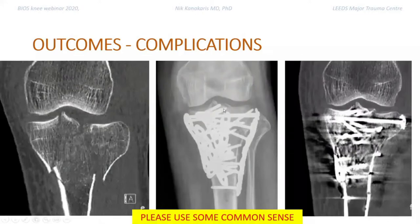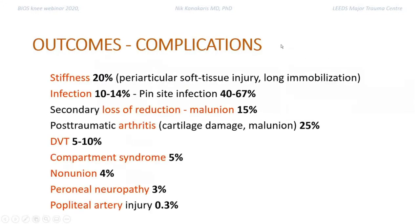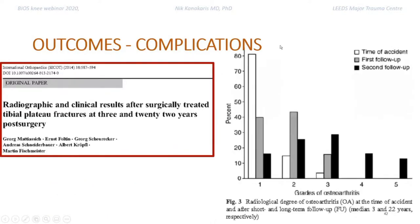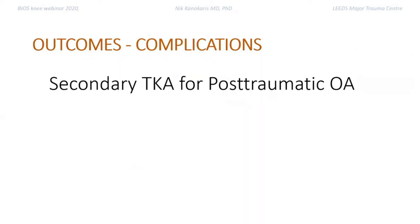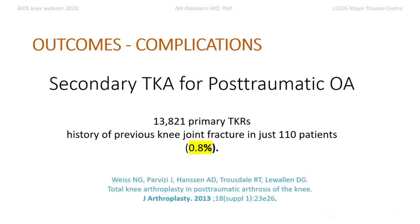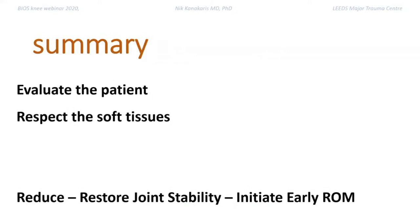As far as outcomes, as long as you are reasonable in how you approach the fracture, complications such as stiffness and infection — especially if you operate with bad timing — can be minimized. Regarding long-term arthritis, a publication shows that in about 22 years of follow-up, a large percentage have post-traumatic arthritis. However, from a national database of arthroplasties, a very small percentage of total knee replacements have a history of fractures, so post-traumatic elements are minimal.